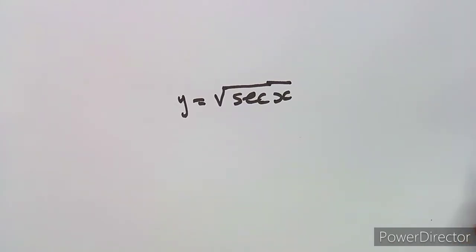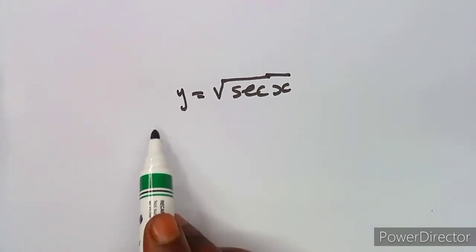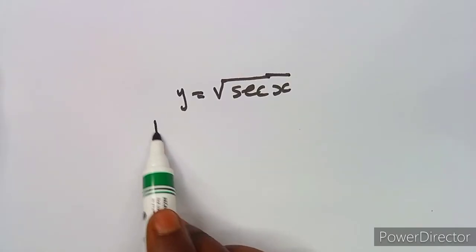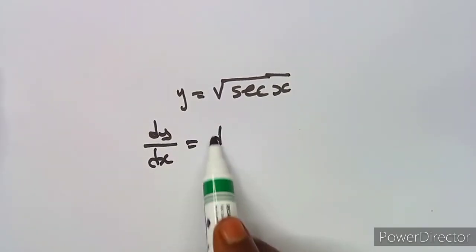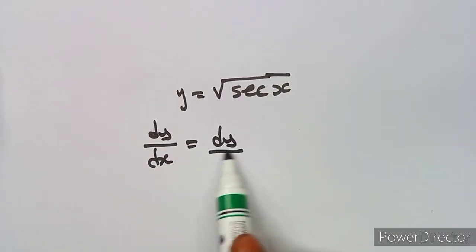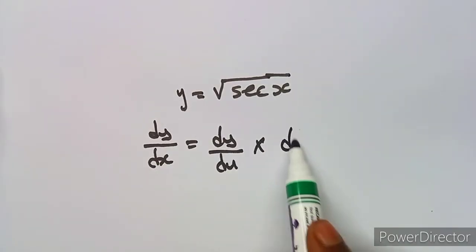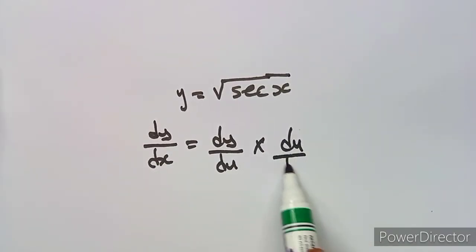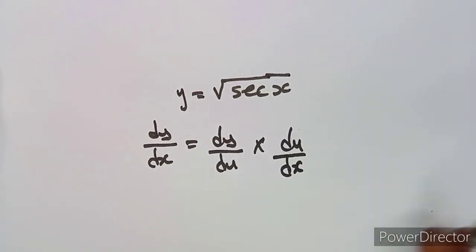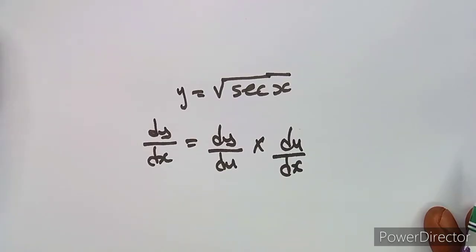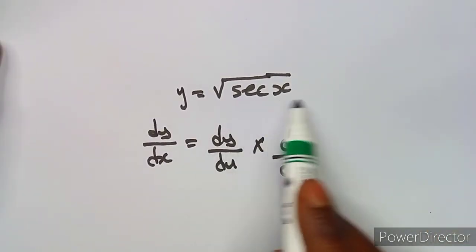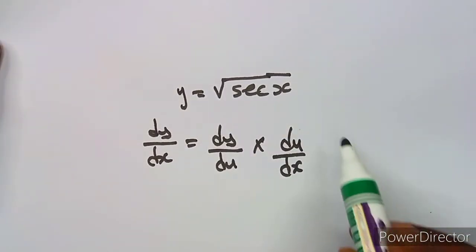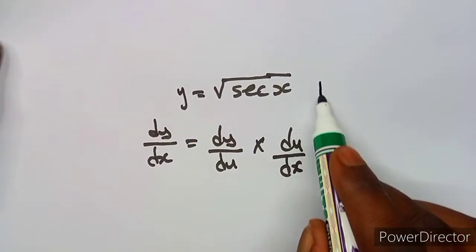We actually know that to apply the chain rule, the formula is dy/dx is equivalent to dy/du multiplied by du/dx. That is the chain rule, or the function of function rule, where you have to let a part — it depends on the condition that you have.